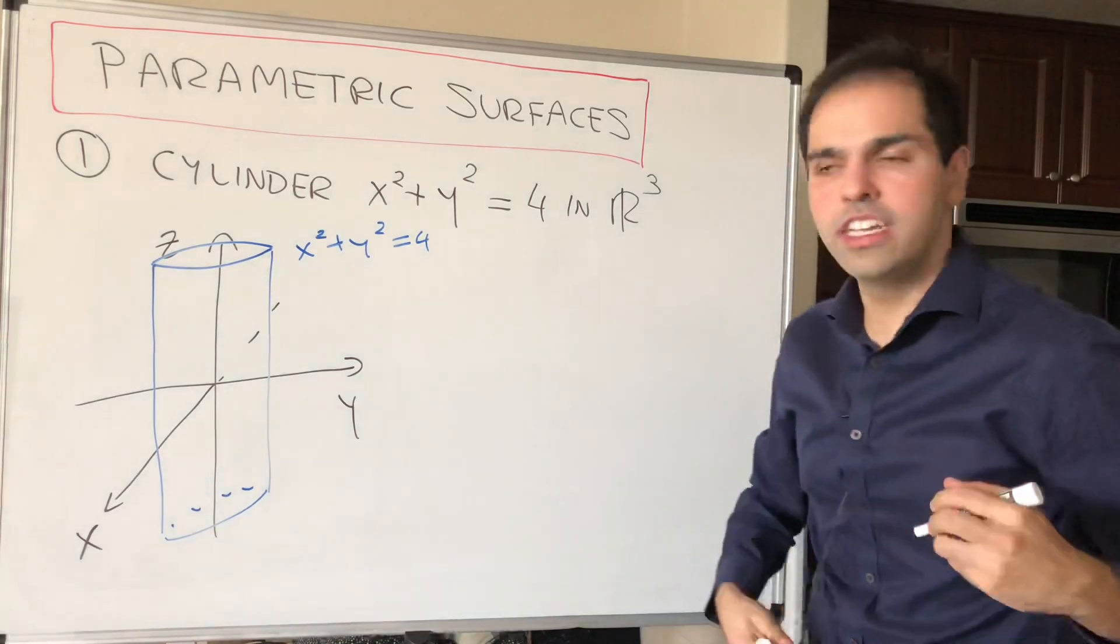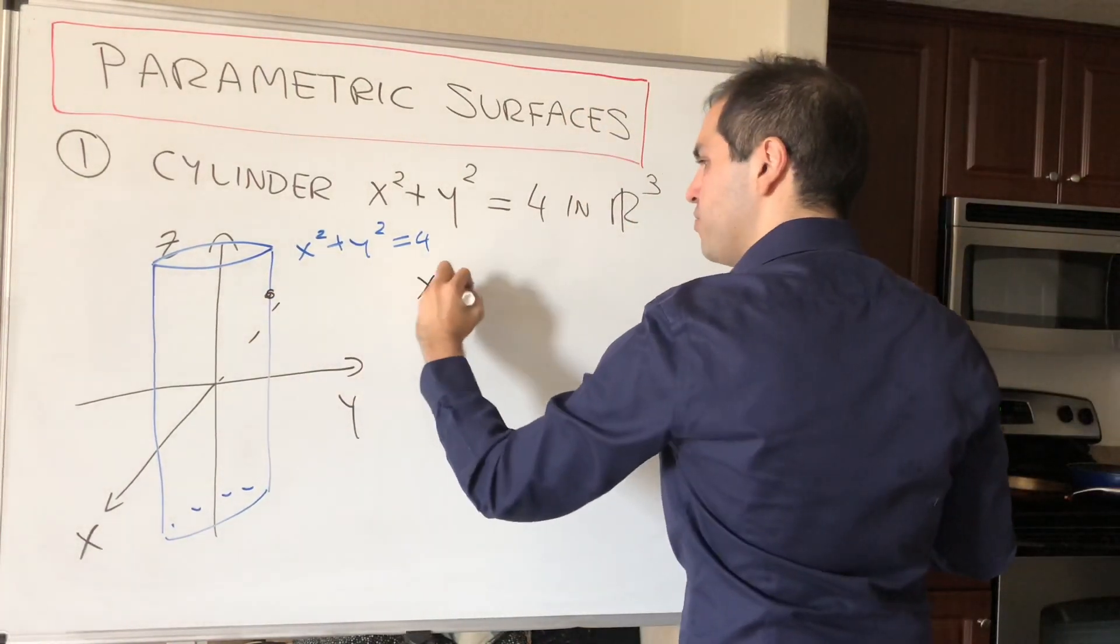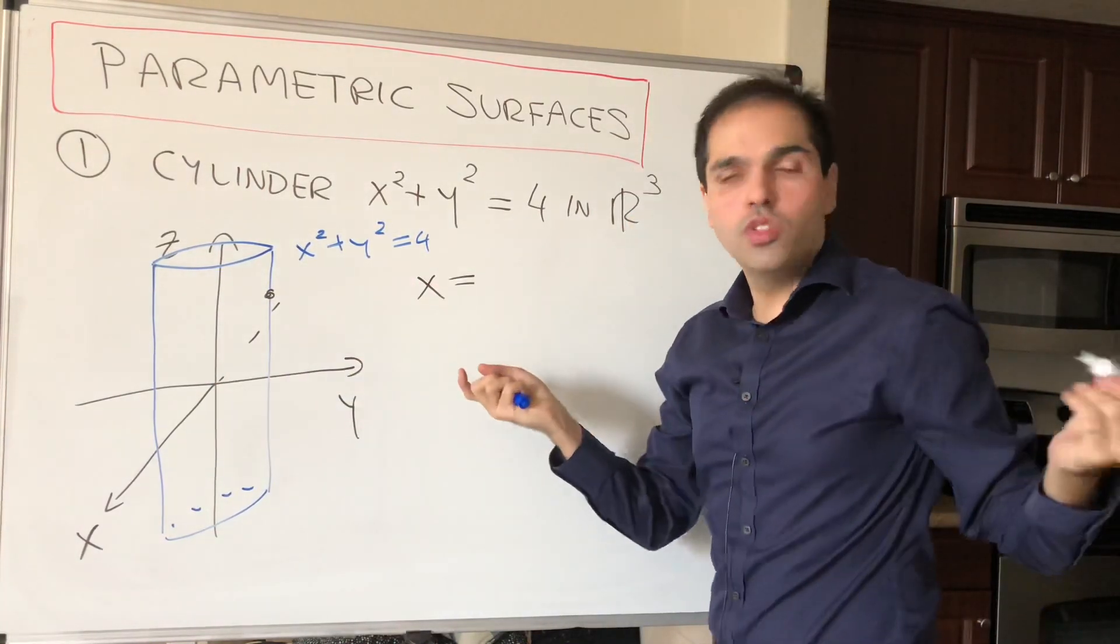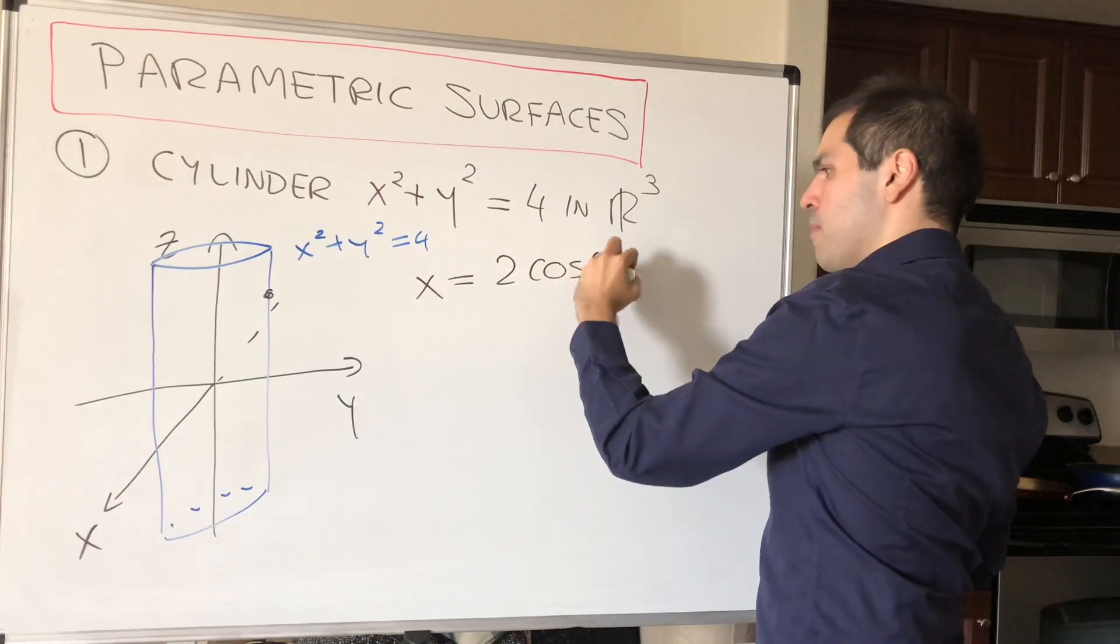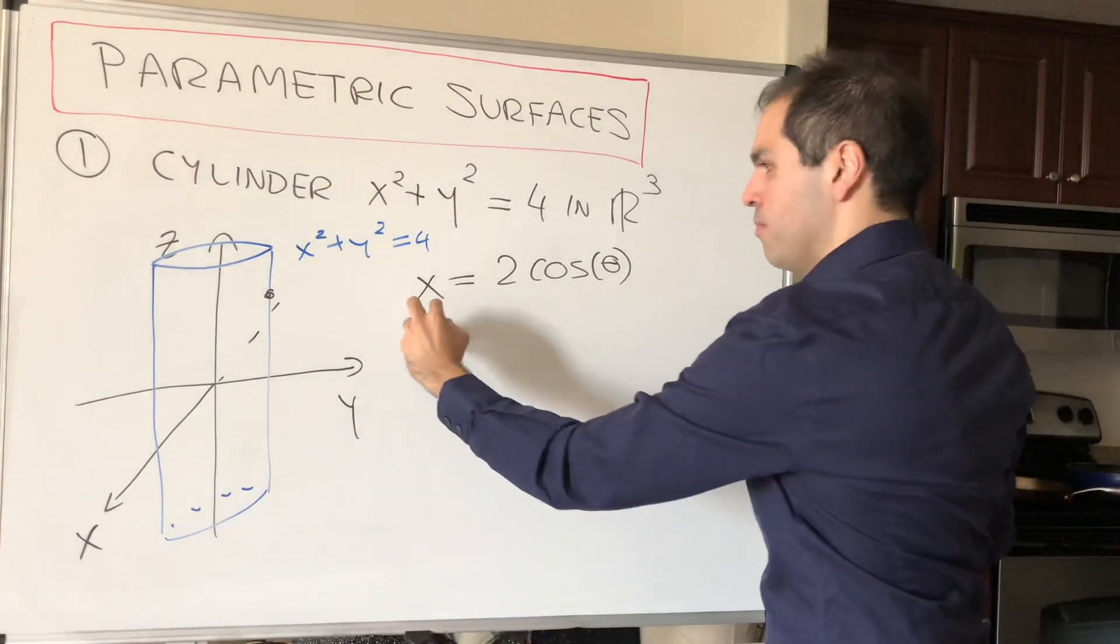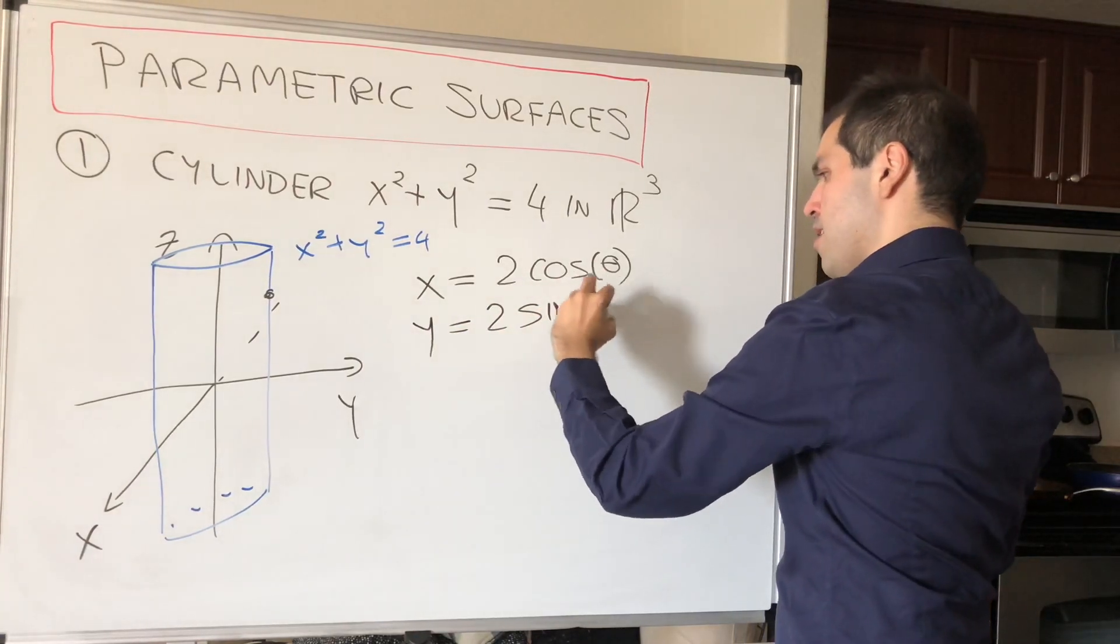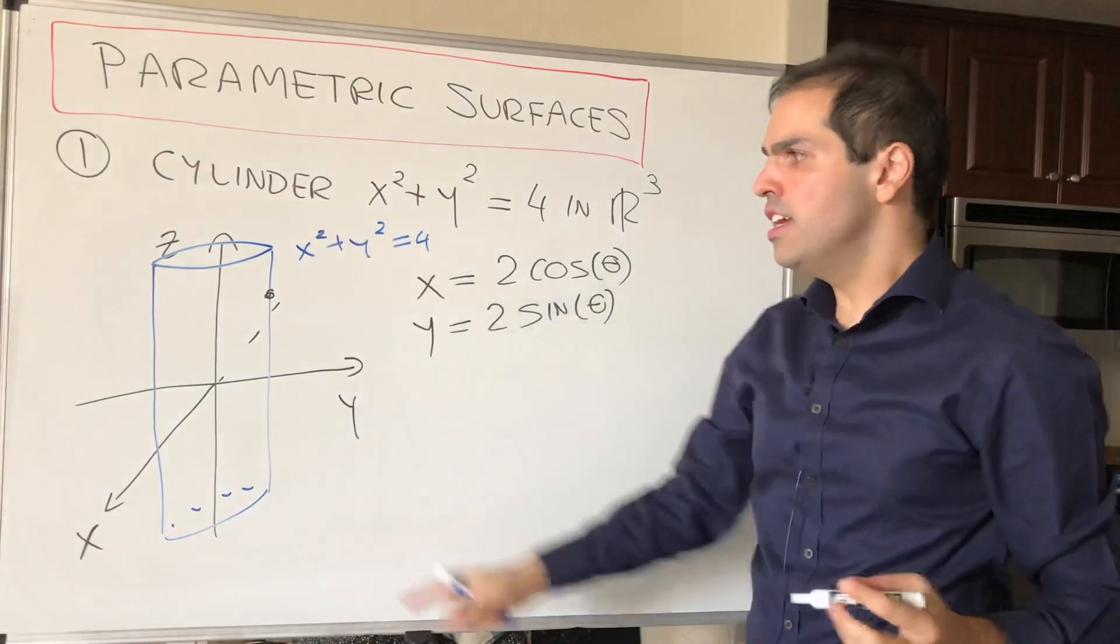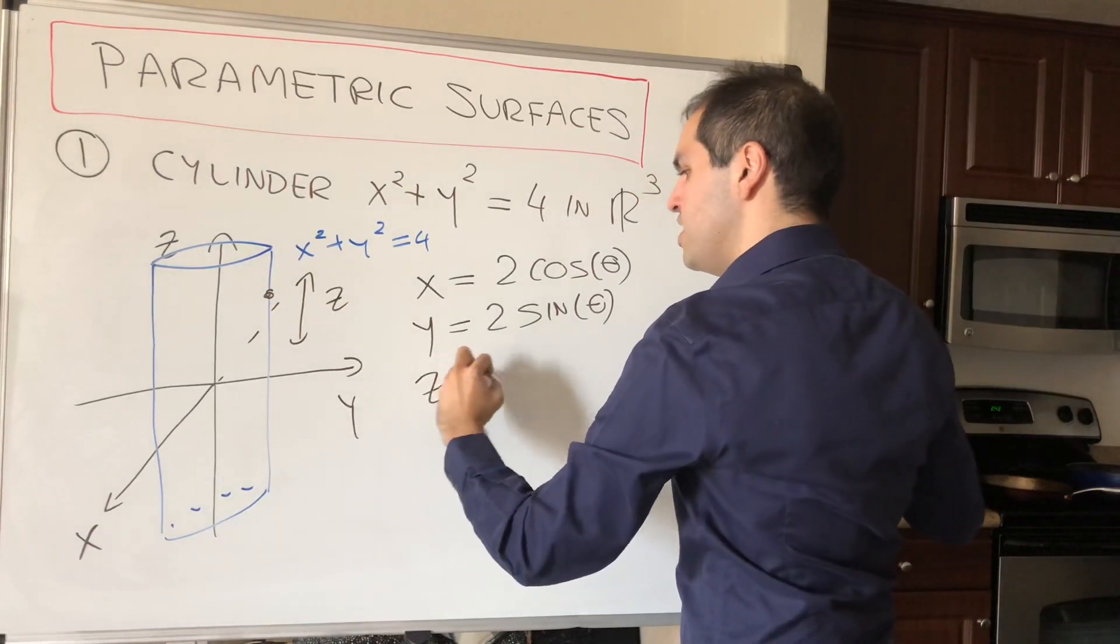Well, usually you would just use cylindrical coordinates. So the way you do it, well, x, so the radius is 2, so x would just be 2 cosine theta, and then y would be 2 sine of theta. Because you see in the xy plane is just a circle, and then z is just this free variable that goes up and down. So z equals z.